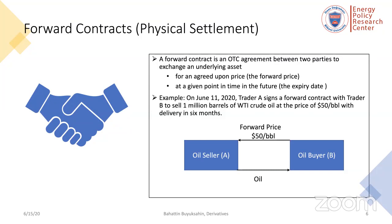The total payout at expiry from party B to party A is $50 million — $50 per barrel times one million barrels — in exchange for one million barrels of oil in six months. Transfer of ownership for party A is one million barrels of oil, and for party B it is $50 million, occurring in six months, not at the inception of the contract. In this forward contract, WTI crude is the underlying asset. Trader A, the oil seller, is said to be short the contract since he must deliver oil in six months. Trader B, the oil buyer, is said to be long the contract since he receives delivery of oil in six months.